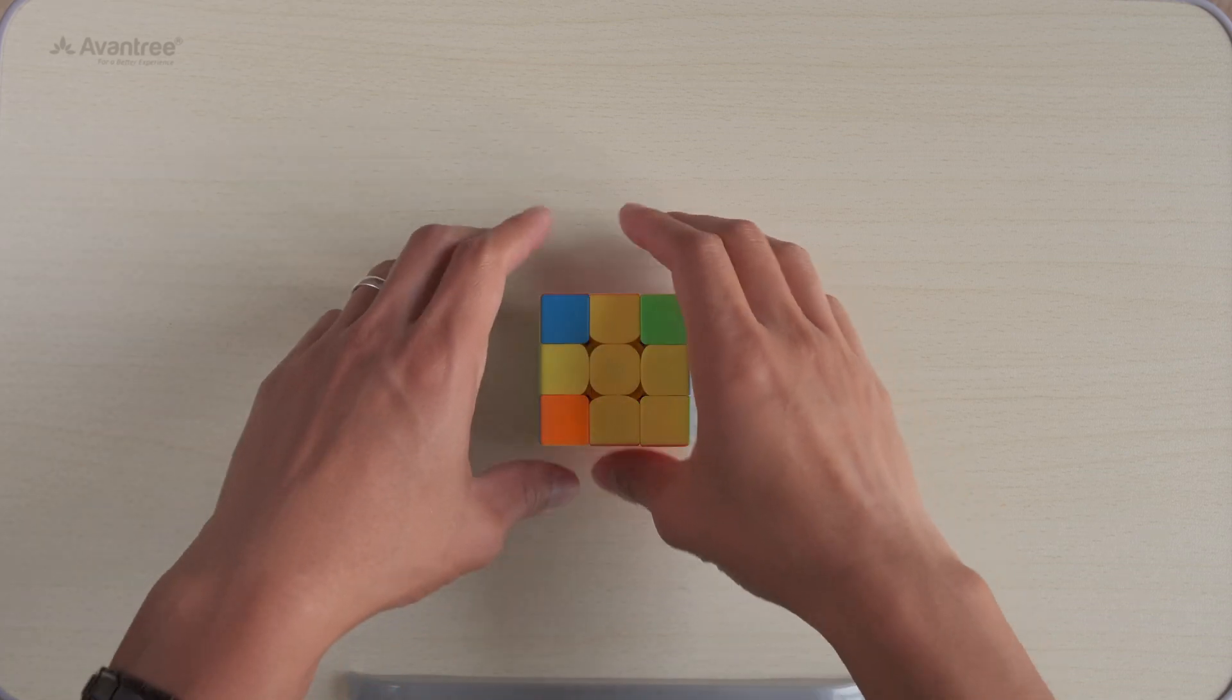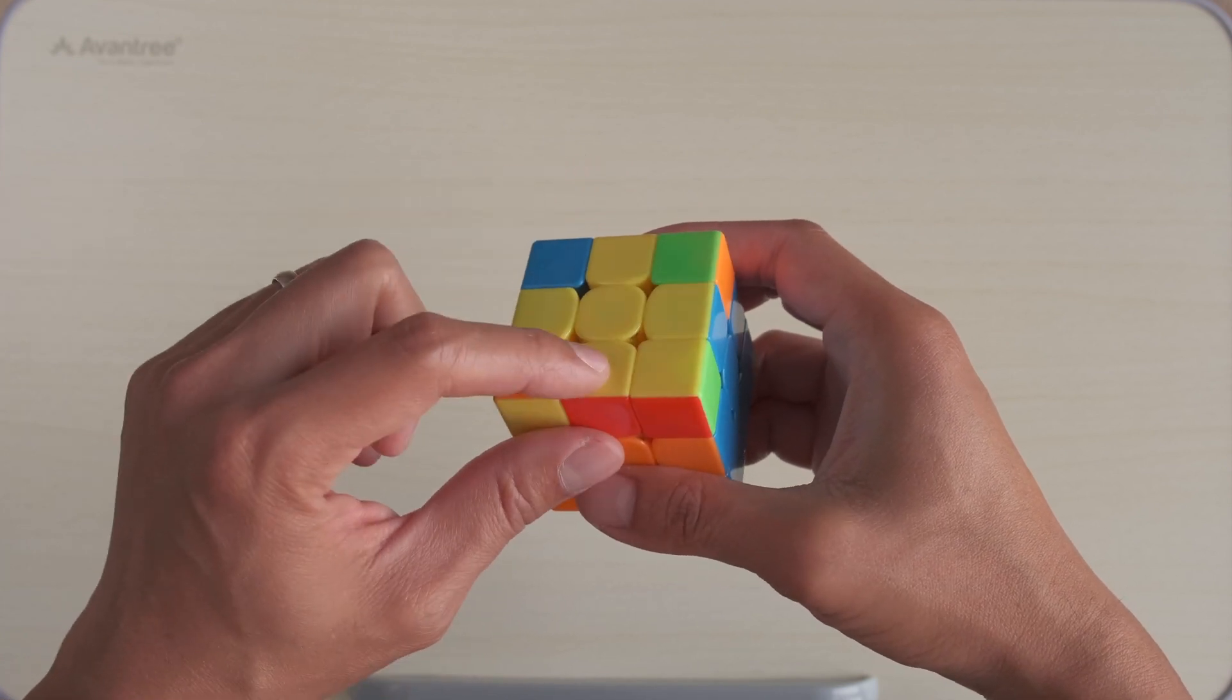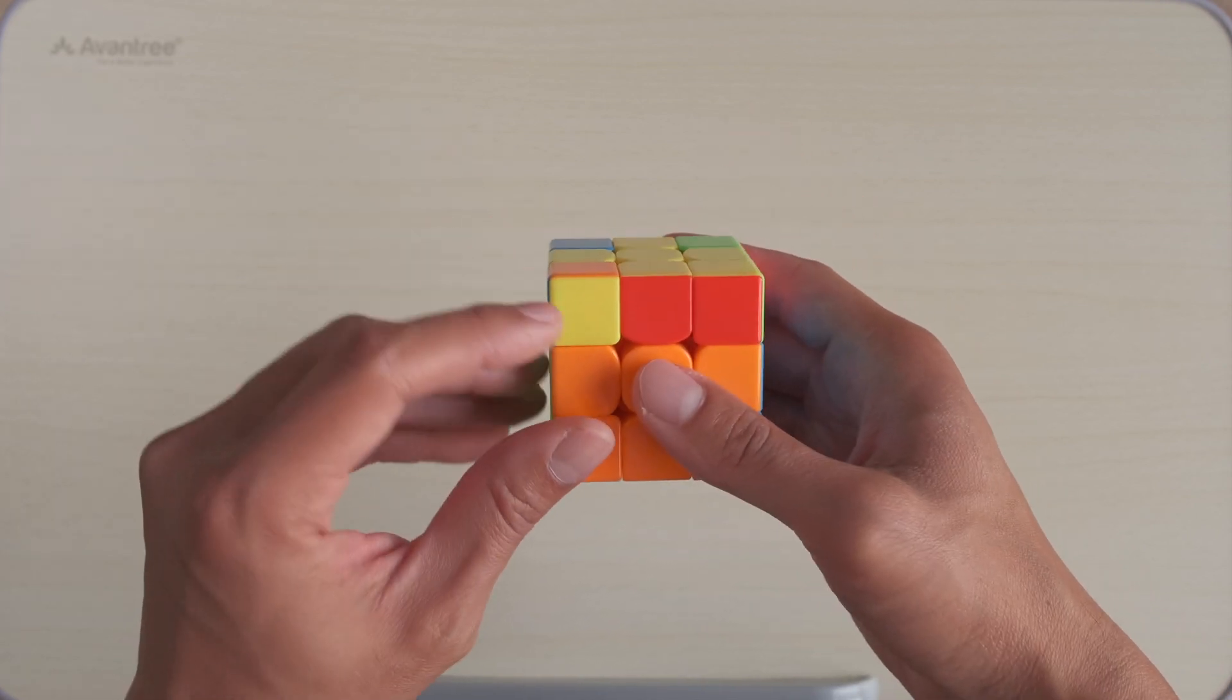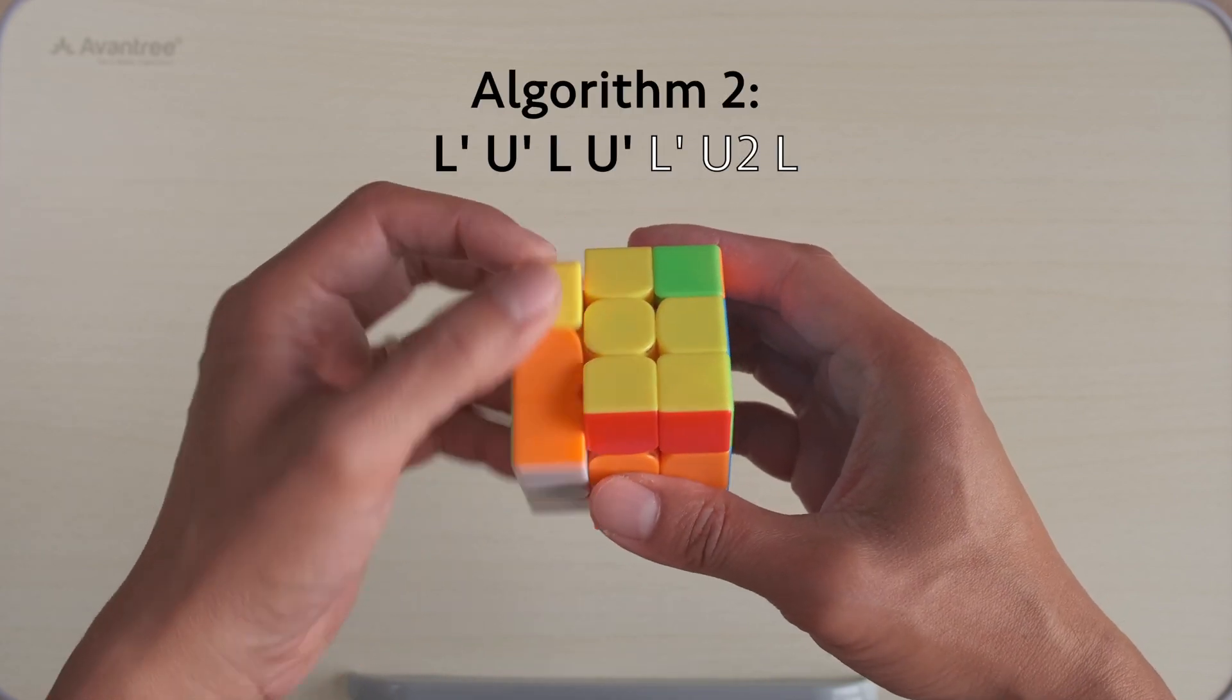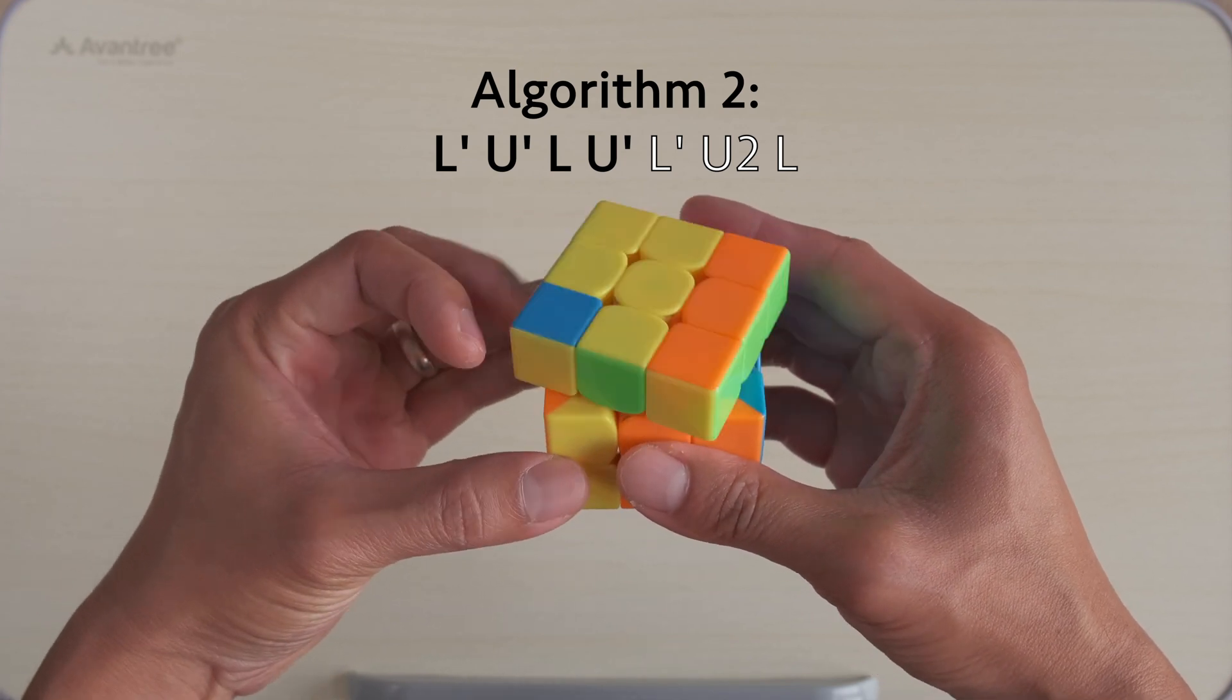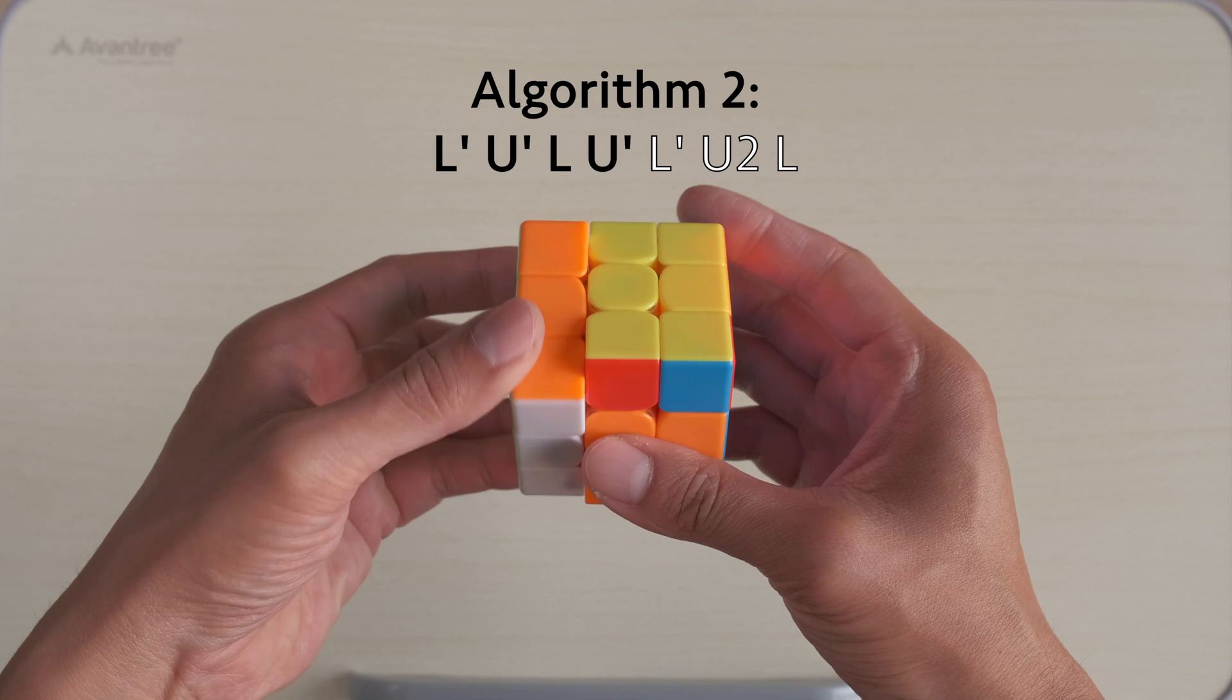Now here we have the second pattern which is exactly opposite to the first pattern. Here we have the cross and the yellow piece in place. Now the yellow is on the left. Therefore, we start the algorithm from here: L', U', L, U', L', U', L', U2, L'.